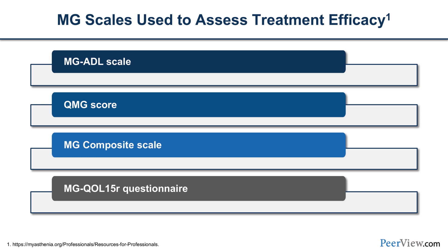The MG-ADL score has eight items algorithmically delivered by the clinician or treating staff to the patient and then summed. The QMG score is much more involved — an extension of the clinical examination — and in clinical practice it takes too long. While it's an excellent tool to measure clinical response, it's not practical in a community or academic clinical practice and is typically reserved for the research realm. The MG Composite scale is a composite of the MG-ADL and QMG scores, but one can substitute one's own clinical examination for the latter.